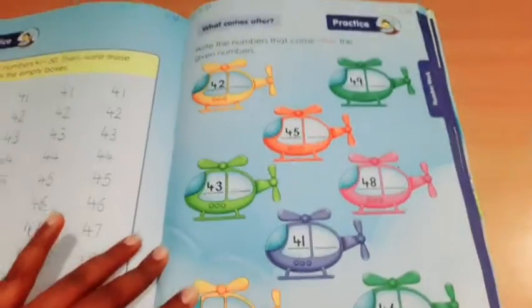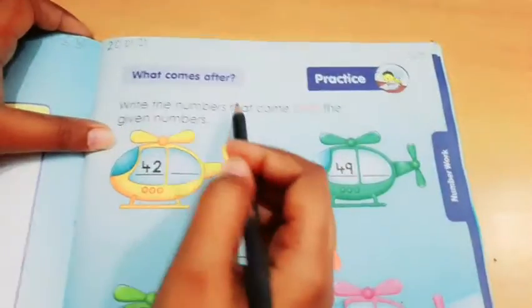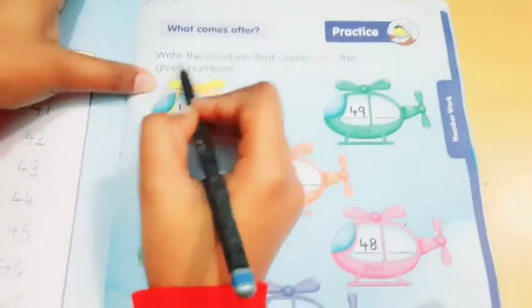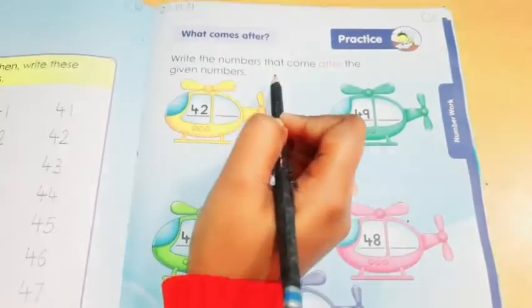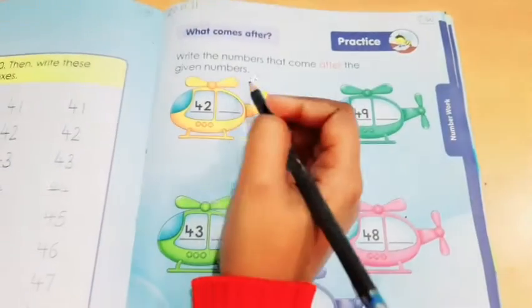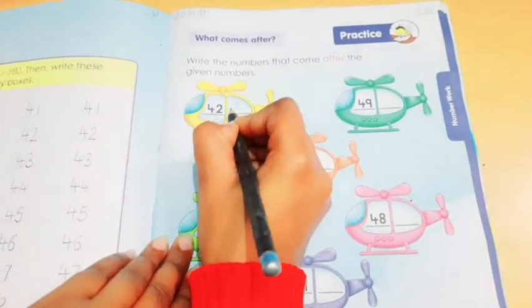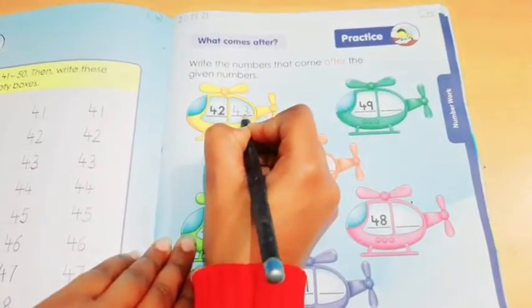Here it is. So students, here we have to do the concept of what comes after. In this concept, you have to look forward. Write the numbers that come after the given numbers. So here the number is given over here, 42. So what comes after? 43.